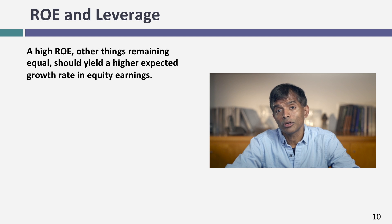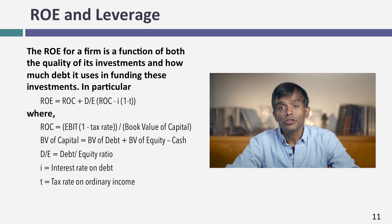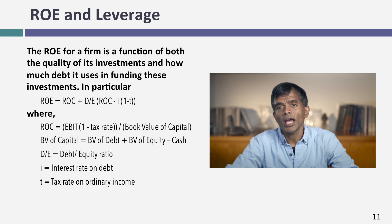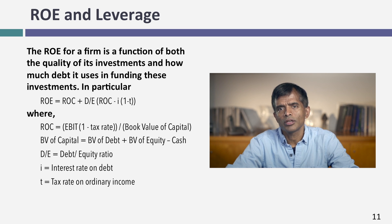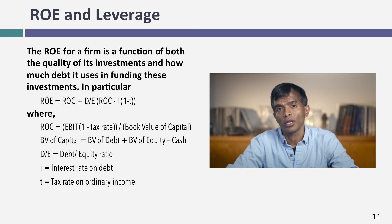Let's think about the return on equity. A high return on equity is good because it pushes up the expected growth rate. There are two ways a company can end up with a high return on equity: one is to take great projects; the other is to take average projects and use a lot of debt. For example, if you have a company with a 15% return on capital and can borrow money at 5% after taxes, borrowing a dollar of debt claims the extra 10% spread for equity investors. Algebraically, return on equity equals return on capital plus the debt-to-equity ratio times the difference between return on capital and after-tax cost of debt.